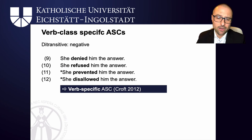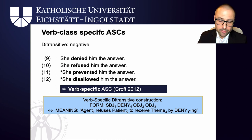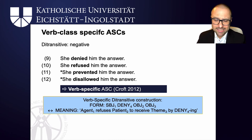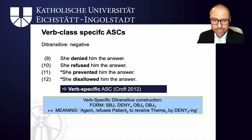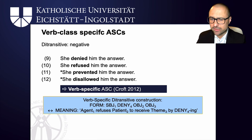The solution to this would be verb-specific argument structure constructions, specifying the particular verbs that can enter into an argument structure construction when you find situations like these. A verb-specific diatransitive construction would look similar to an abstract diatransitive construction, except that instead of an open verb slot, you use the lexeme deny to indicate that a form of deny must be there: subject, deny, object, object — with the meaning that the agent refuses the patient to receive the theme by denying. You would need a similar construction for refuse. How many verb-class-specific constructions and how many verb-specific constructions we need to account for the actual behaviour of these basic human scenes remains an open question.